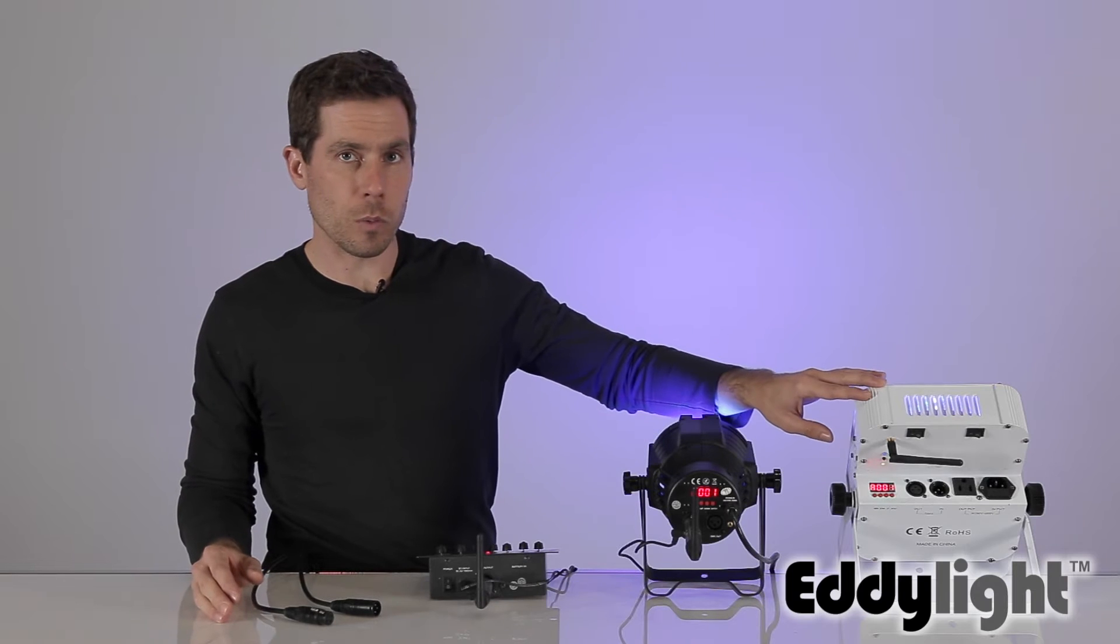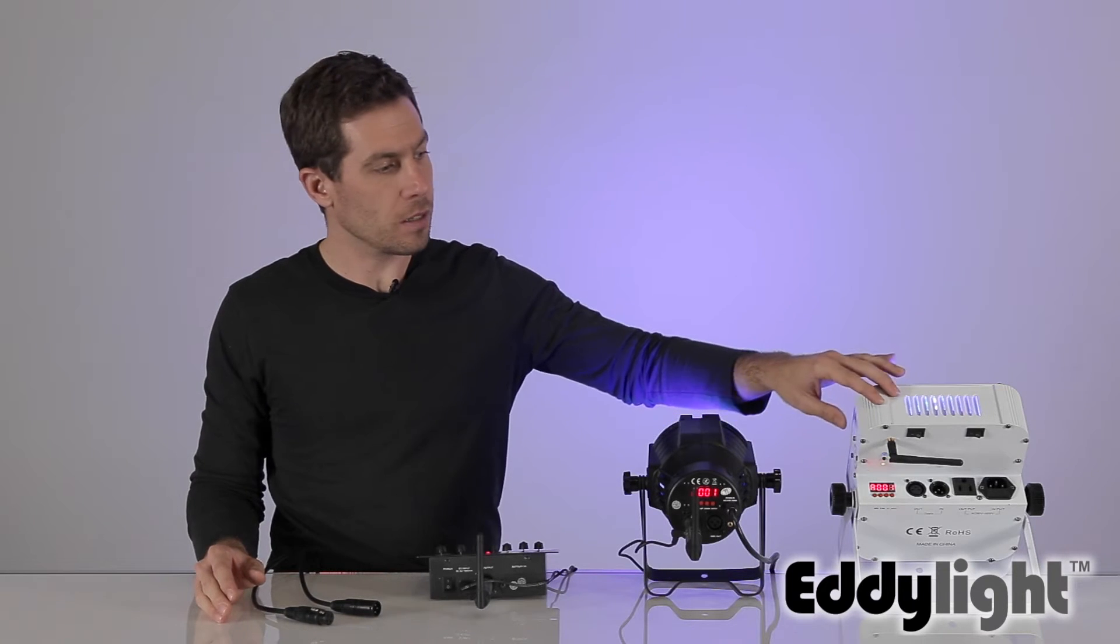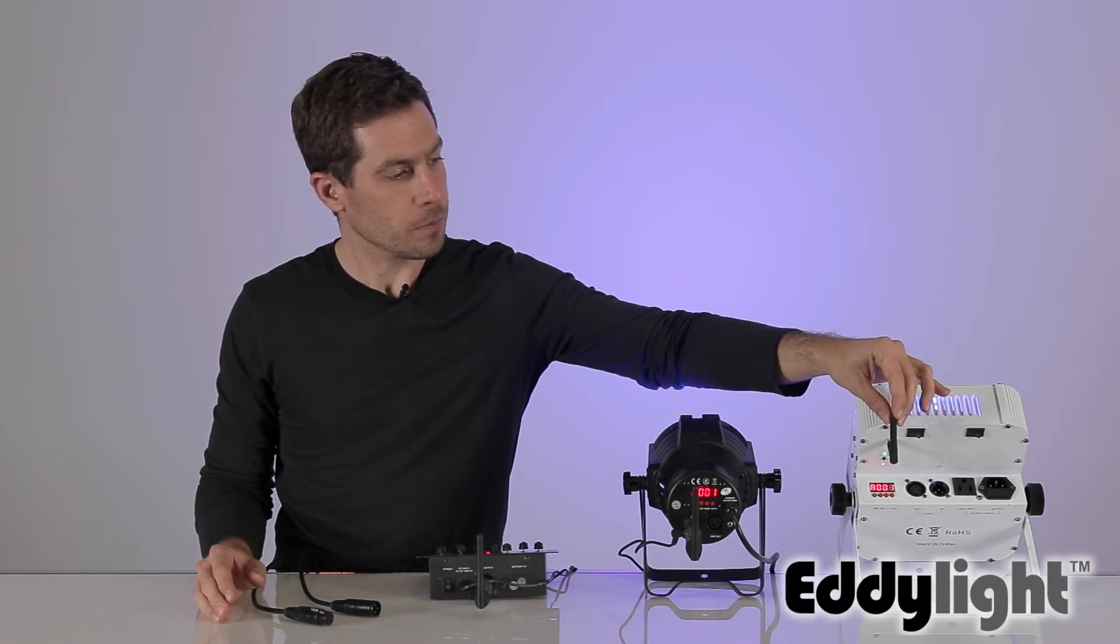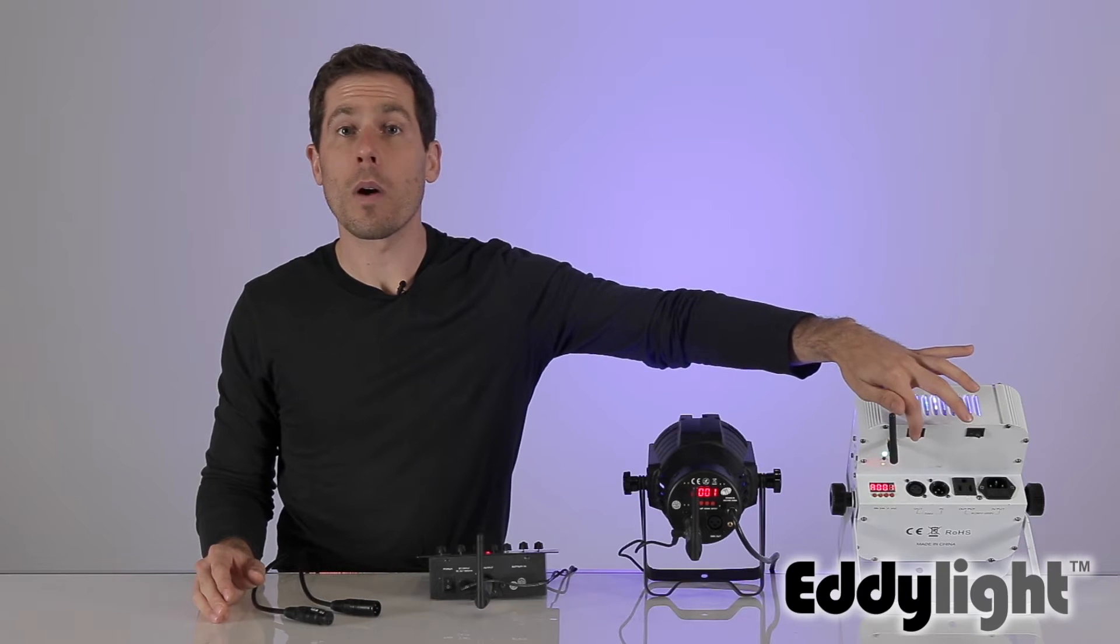In the case of the 5-in-1, again, the receiver is built in, as you can see with the antenna, and a switch to put the wireless on and off.